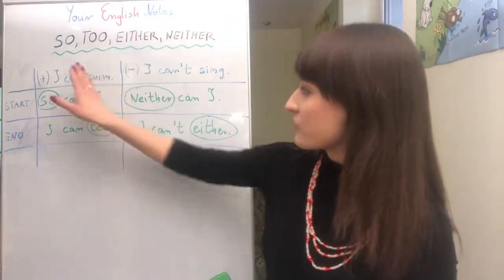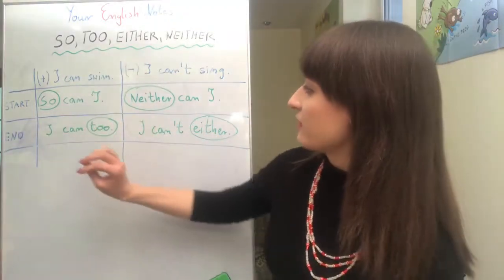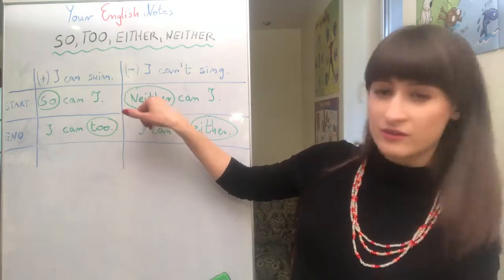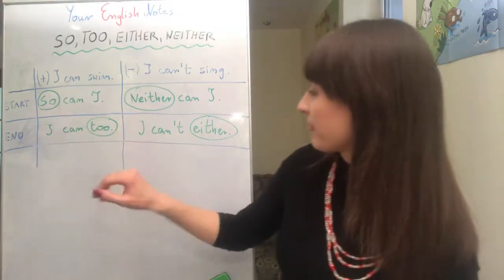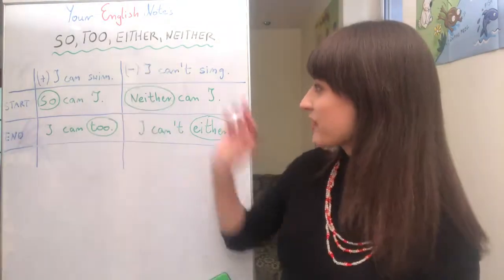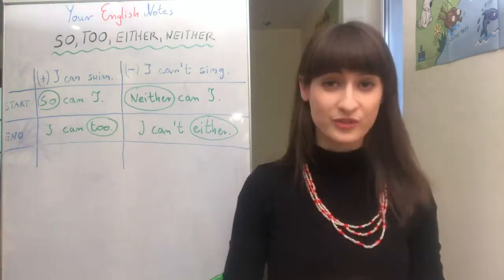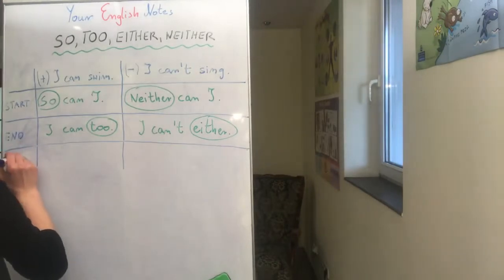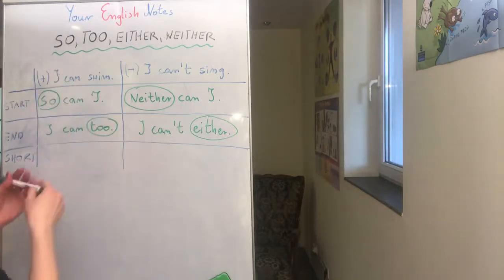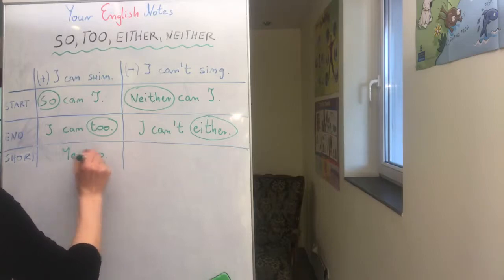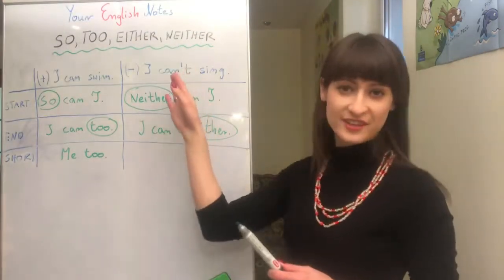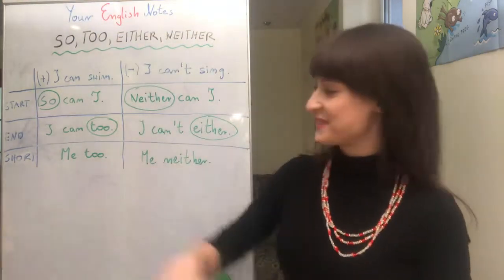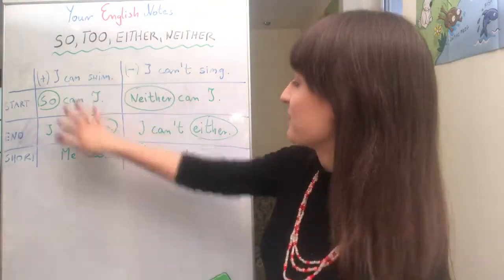It can be sometimes very confusing if you are not fluent enough, but with "can" I think it's quite easy. So you can remember: at the beginning of the sentence we put "so," or when we agree with a negative sentence, we put "neither." At the end of the sentence, we put "too" or "either." But I've got an easier option for you: if you want to agree with a positive sentence, it's enough to say "me too," and if you want to agree with a negative sentence, it's enough to say "me neither."